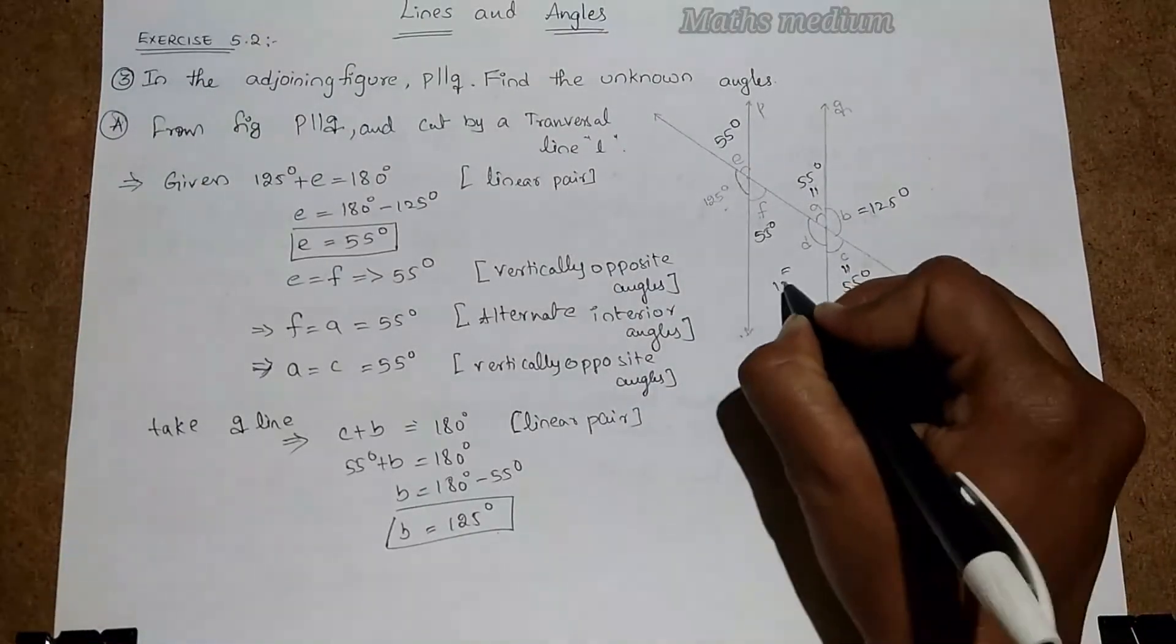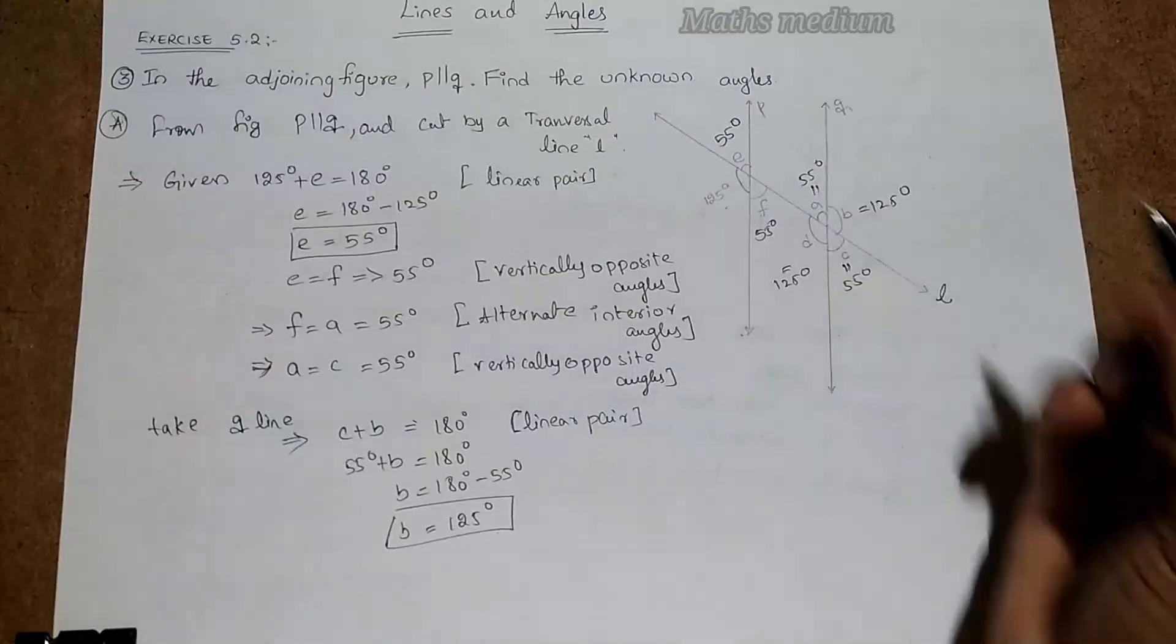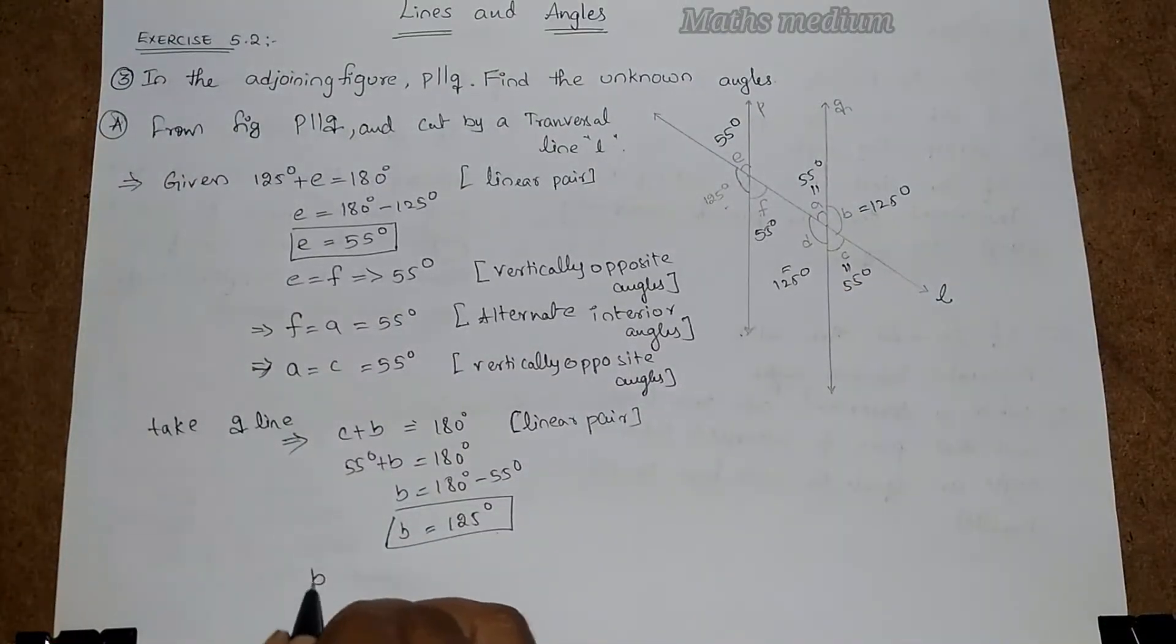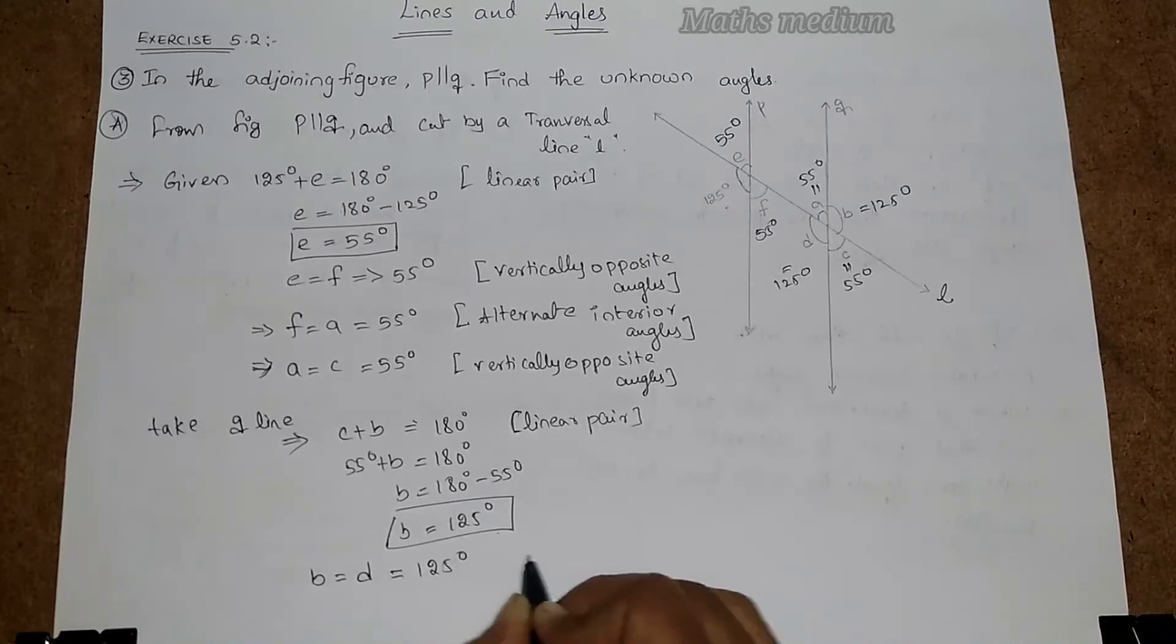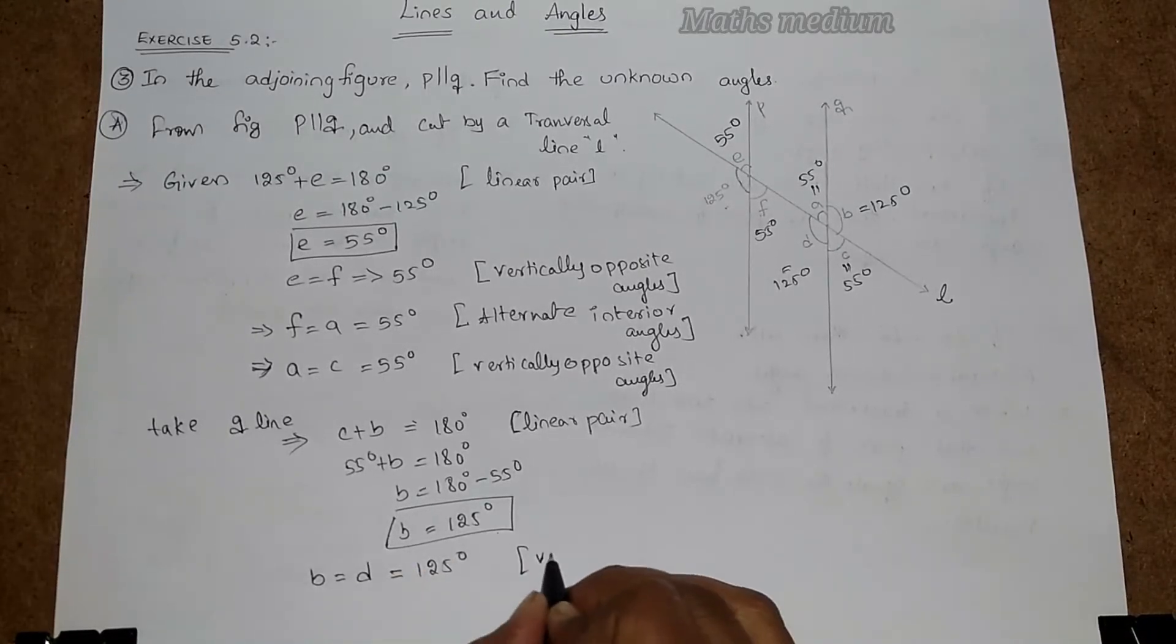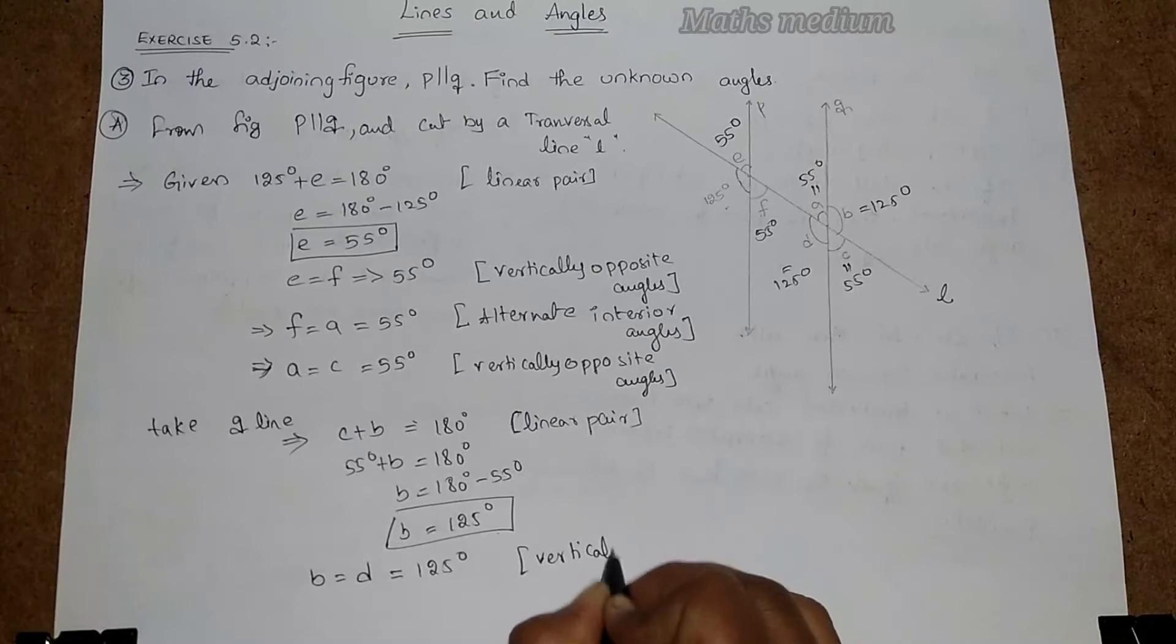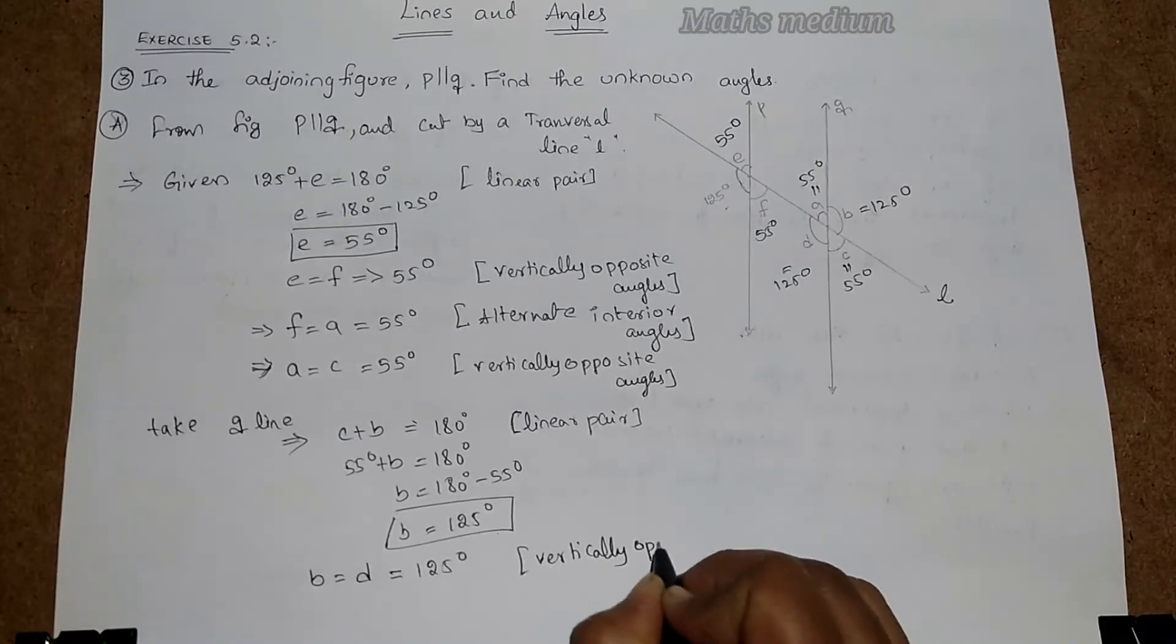Similarly D also 125 degrees because of vertically opposite angles. So B is equal to D, that equal to 125 degrees. Those are vertically opposite angles.